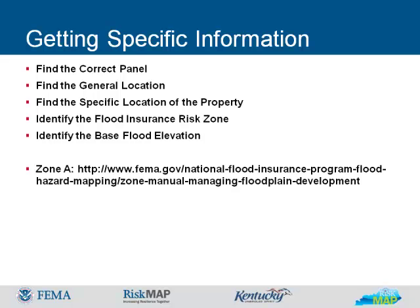If a property or building is inadvertently shown within the special flood hazard area or has been raised above the BFE by fill, FEMA can amend or revise the maps with a letter stating the property or building is not within the special flood hazard area. These letters are called a Letter of Map Amendment, or LOMA, or a Letter of Map Revision Based on Fill, or LOMR-F. To estimate a BFE, the lines shown near the property on the FIRM can be used. When a property is between two BFE lines, you may estimate the BFE at the property by interpolating between these two base flood elevations.